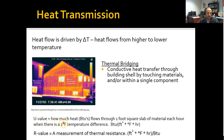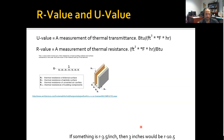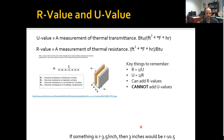It is helpful to know the unit for U-value, which is BTU per square foot per degree Fahrenheit per hour. We'll go over that in more detail later. As a review: R equals 1 over U, and U equals 1 over R, so it's easy to go between those two.